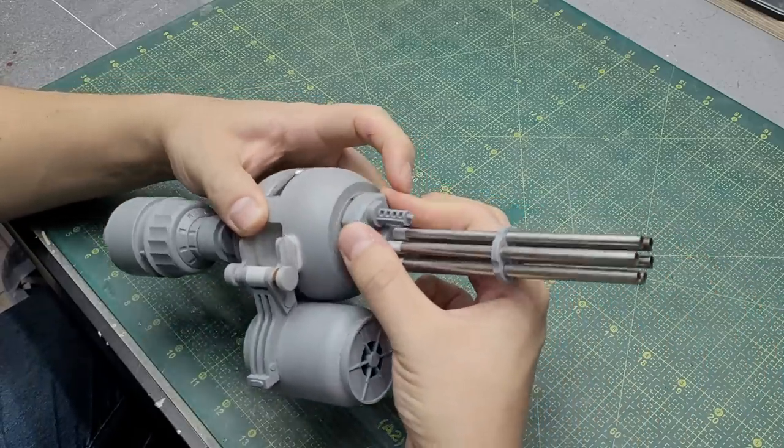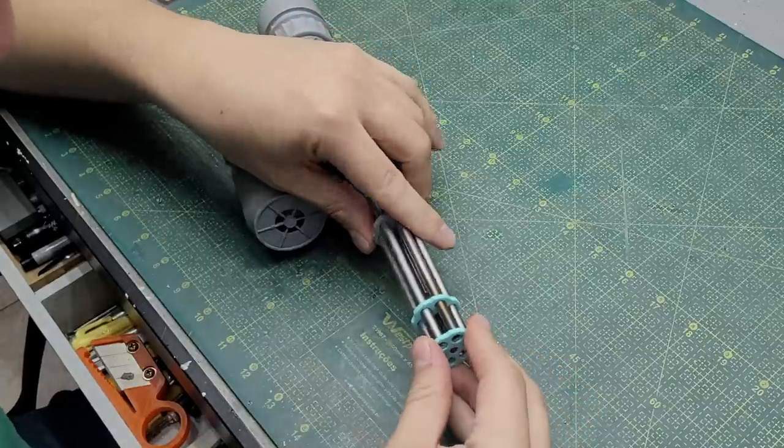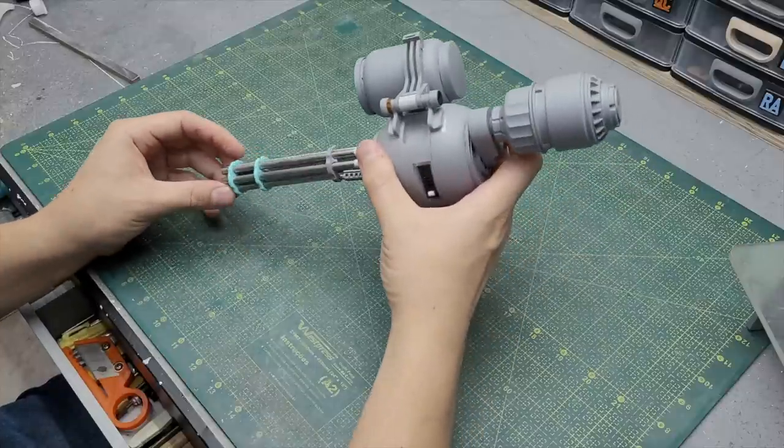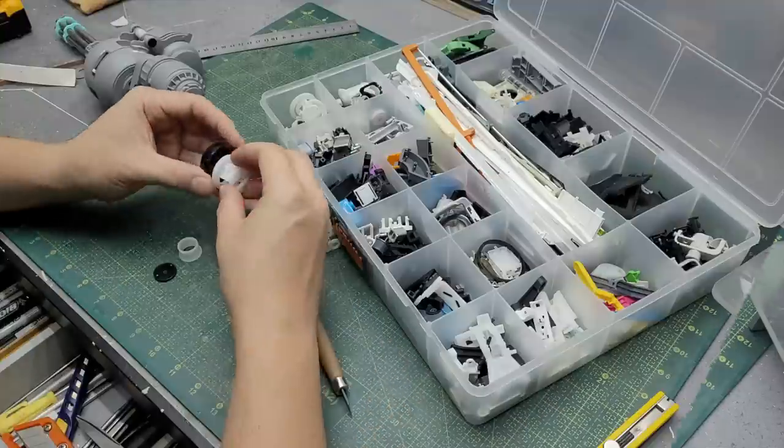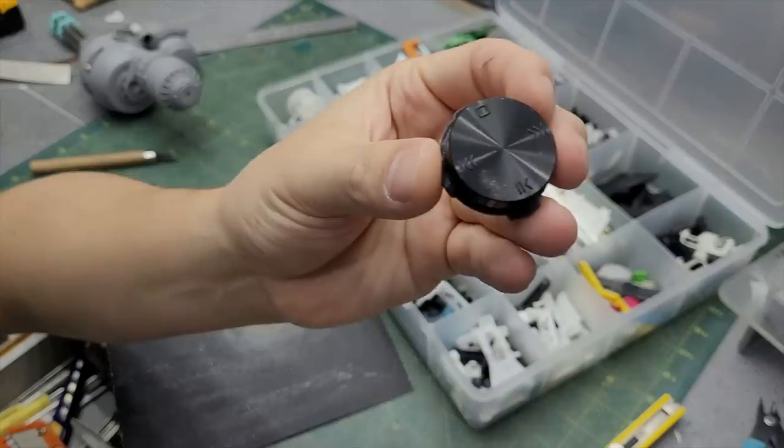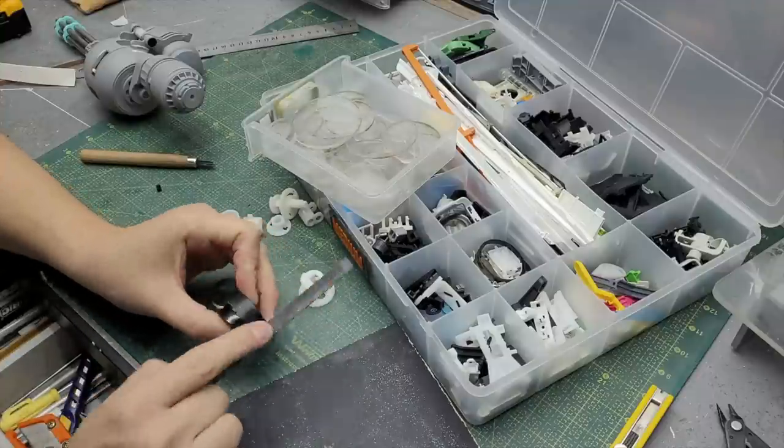At this point I also made these two stabilizers that go right next to the tip of the gun barrels. Now I was still feeling the need to add some structures to the back of the gatling gun.